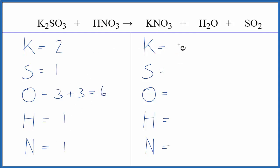Product side, one potassium, one sulfur, and then our oxygens we have three plus one plus two. Three plus one plus two, that's six oxygens. Hydrogens, two, and then nitrogens, one.